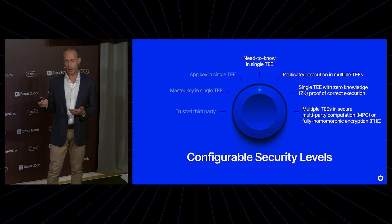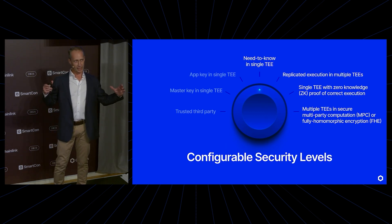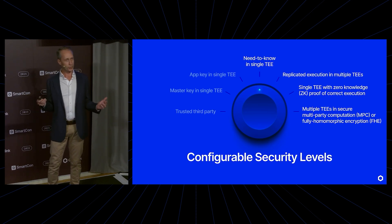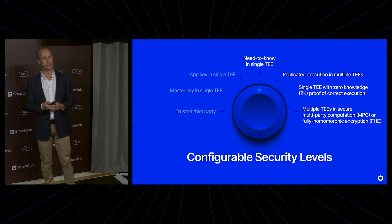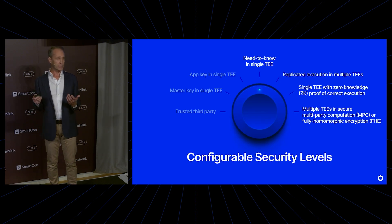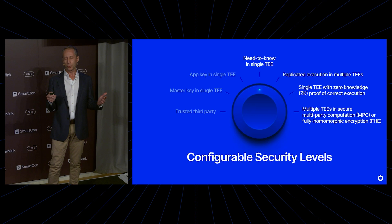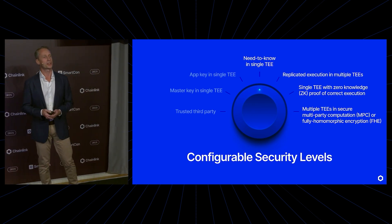We would also like to execute a computation spread out over multiple TEEs, so that no single TEE sees any of the secret — even inside of the TEE. One can do that with secure multiparty computation or fully homomorphic encryption. The end goal is that every user can essentially choose the right balance between security and performance for whatever application they are building.